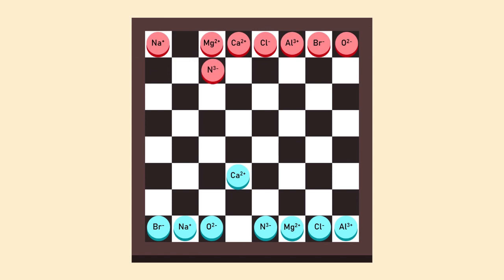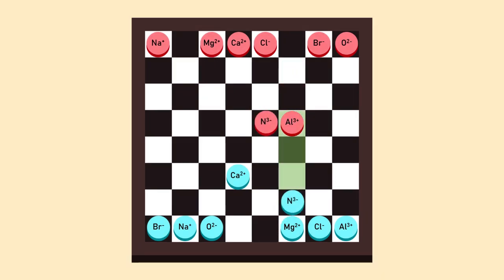The players continue the game by strategically placing their ions. As an ion approaches an opponent's ion with the opposite charge, it can combine with it and form a new compound.